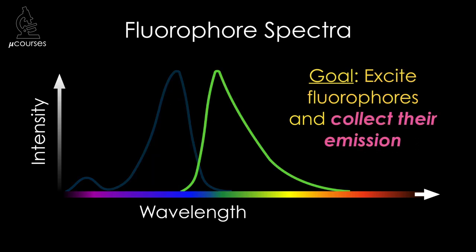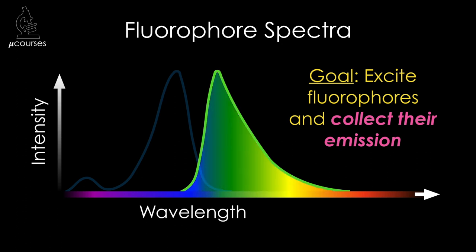Now let's think about collecting emission light from the fluorophore. The fluorophore emits photons across the spectrum. To obtain the brightest possible image, we want to collect as much of the emission light as possible, being sure to collect the peak emission wavelength, since most of the photons emitted by the fluorophore are going to be at or close to this peak.